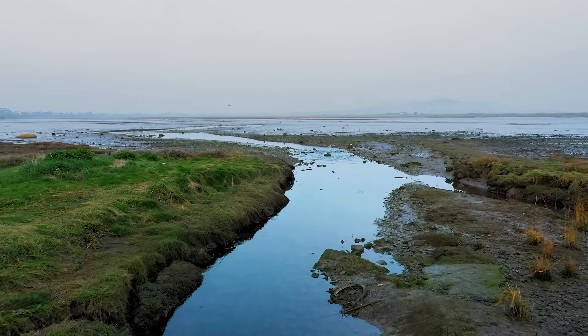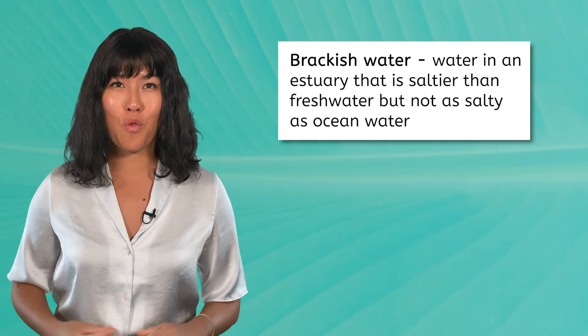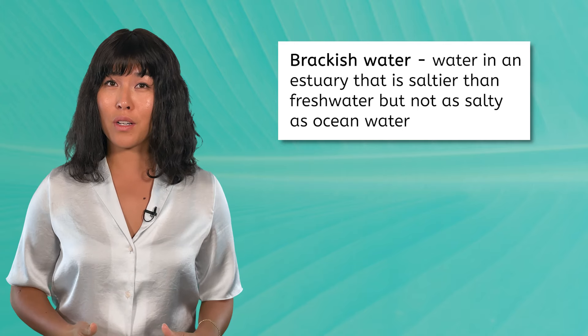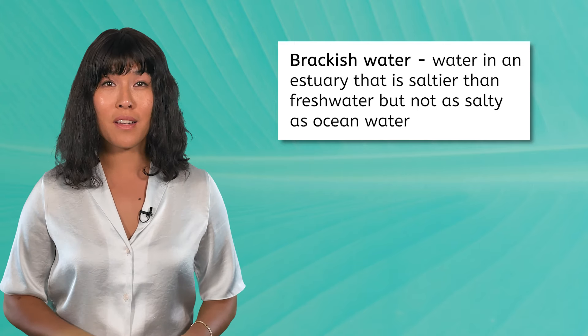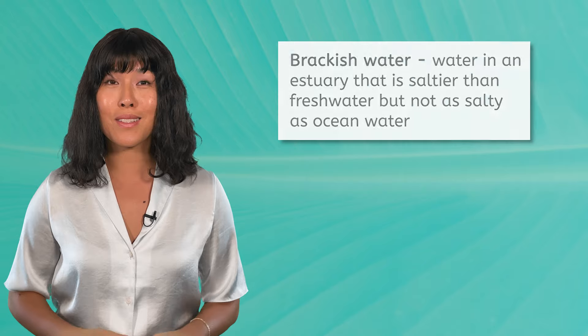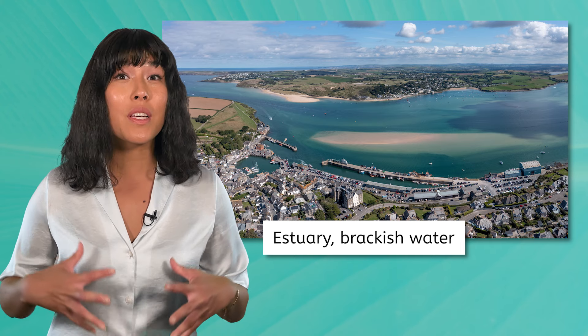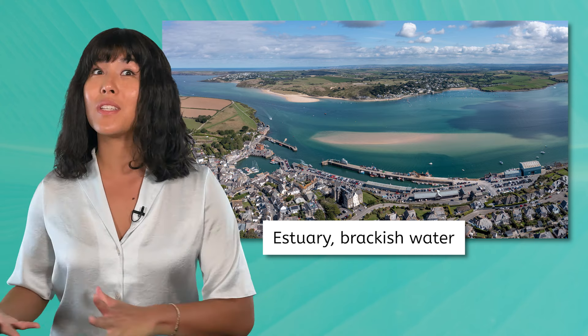Eventually, this water will continue flowing out into the ocean, as tide conditions permit. But while the water is in the estuary, is it freshwater or saltwater? Well, we could say that it is both — or neither. The scientific term for the water in an estuary is brackish water, which means that it is saltier than freshwater but not as salty as water in the open ocean. But because it does contain some salt, an estuary is classified as a marine system. The estuary is the transition zone, and its brackish water represents an increasing amount of salinity as we move farther out into the sea.